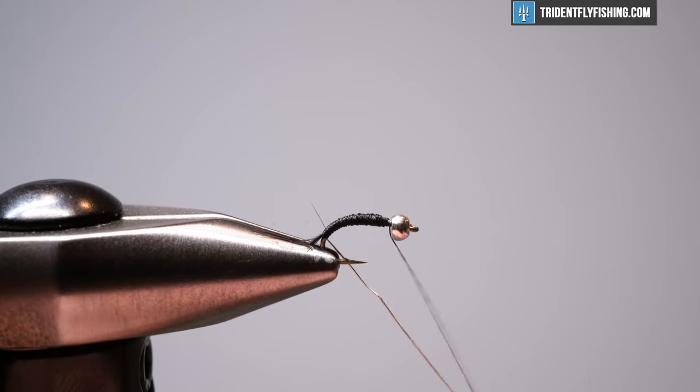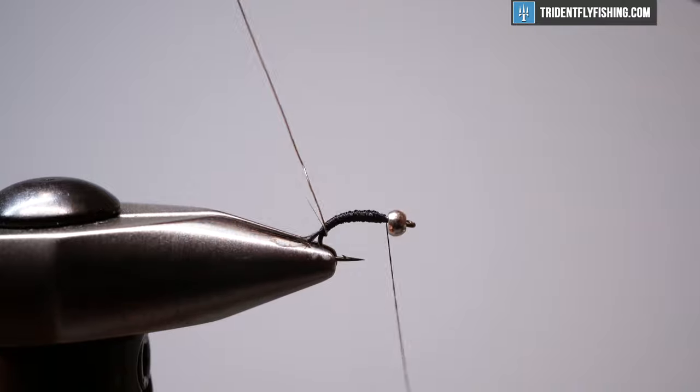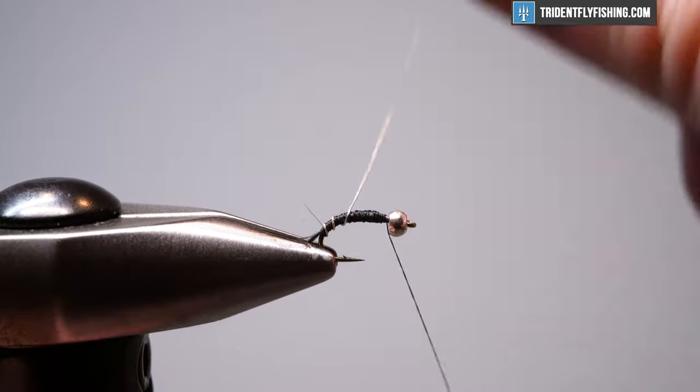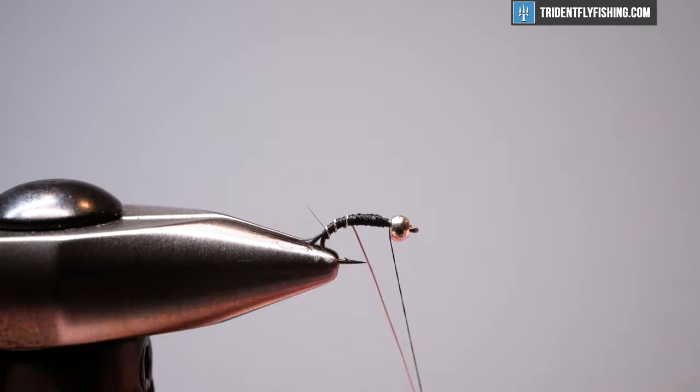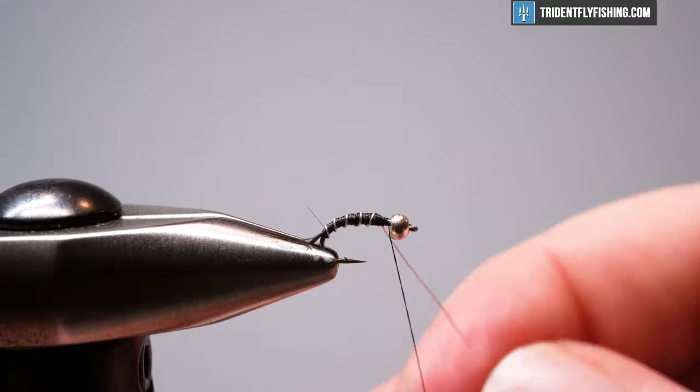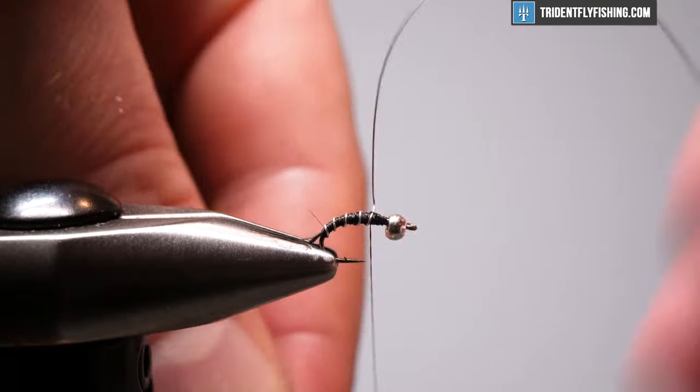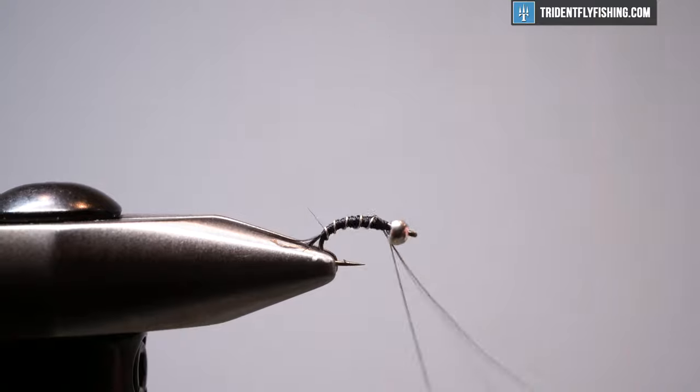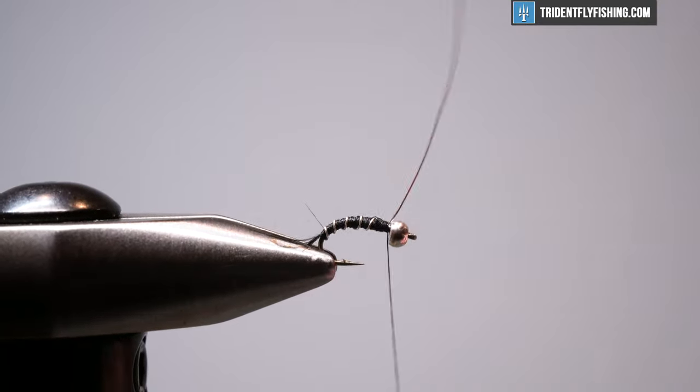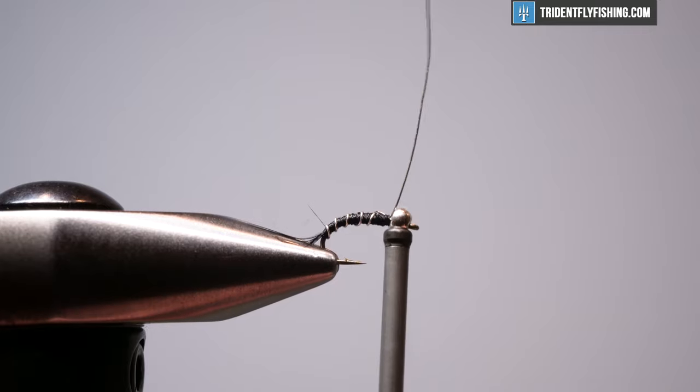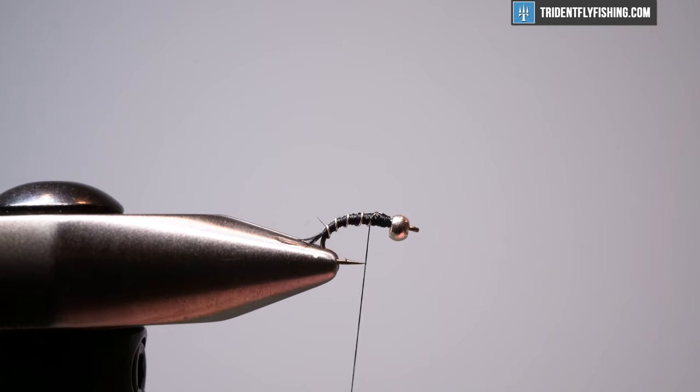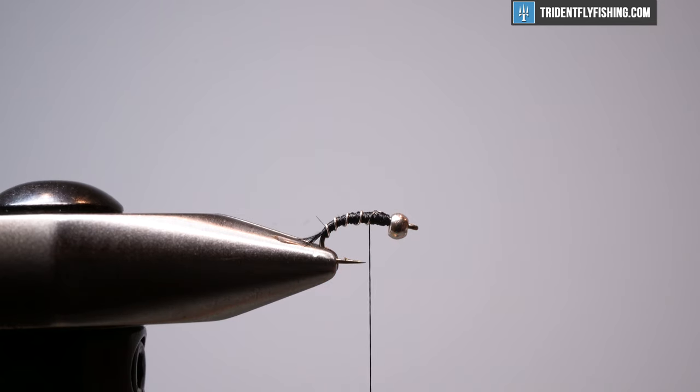So we're bringing our wire up and we're going to do a couple open spiral turns here. I think five on this. Two, three, four, and a fifth. And then we will tie this off. Let's get a couple wraps on that. And then we'll just helicopter this off. So let's come back here and start on our thorax.